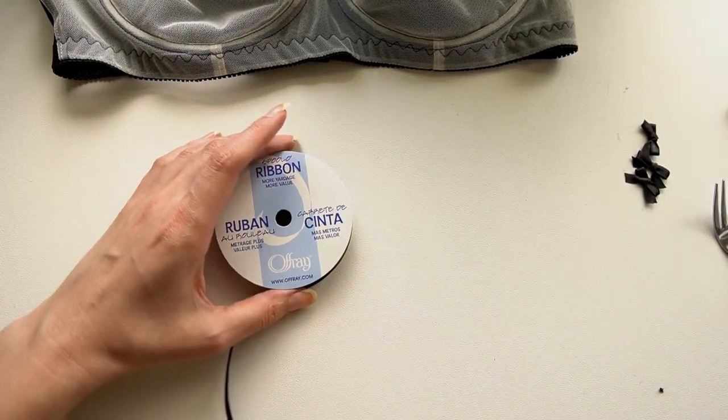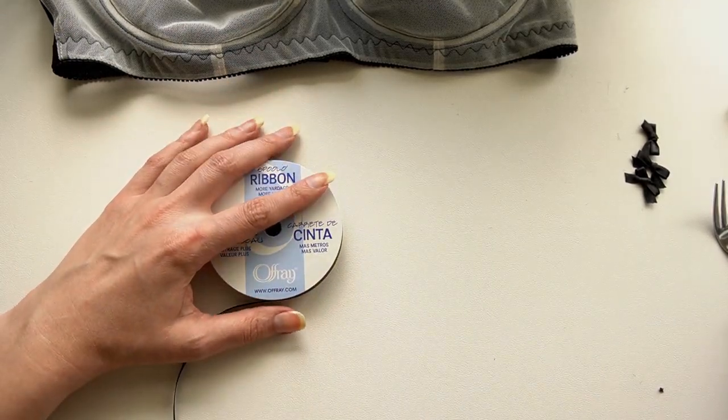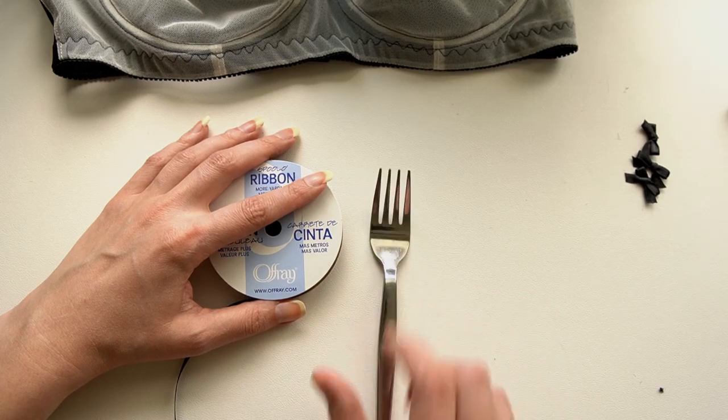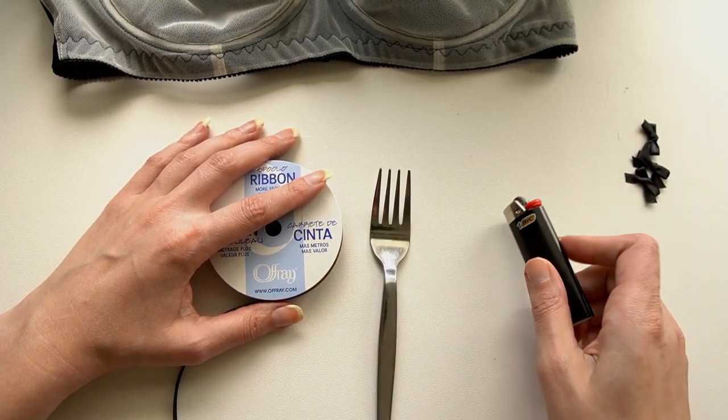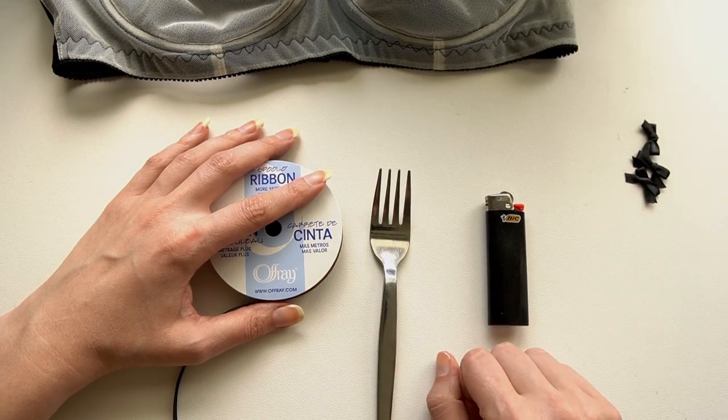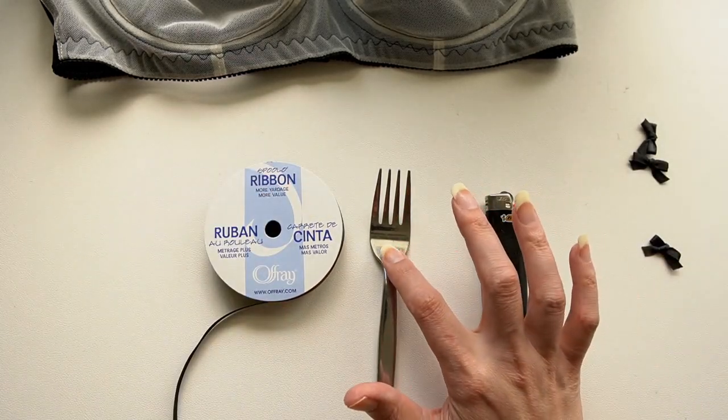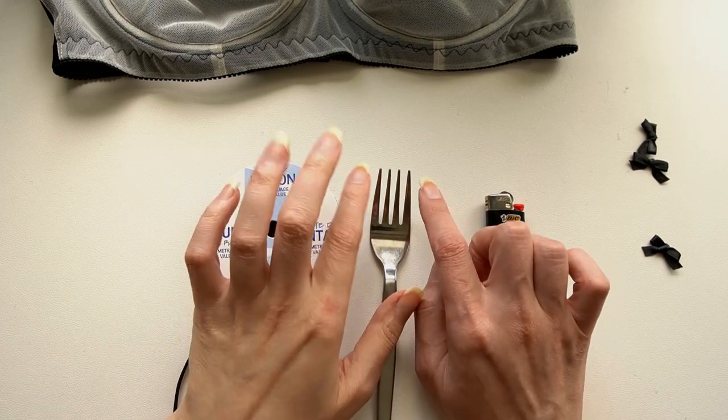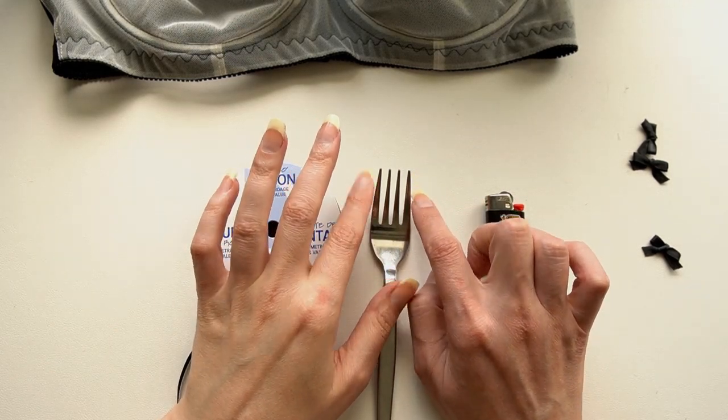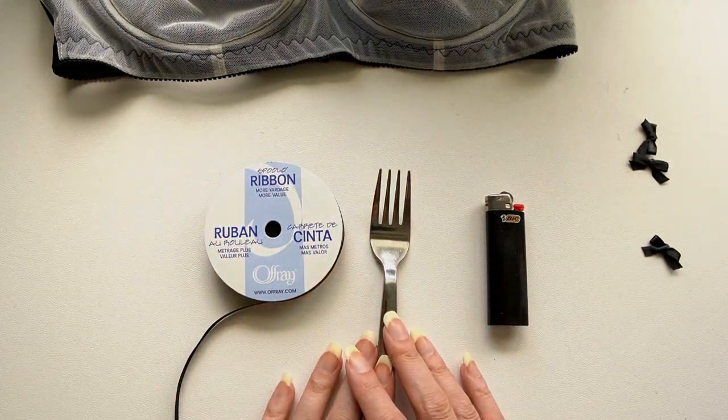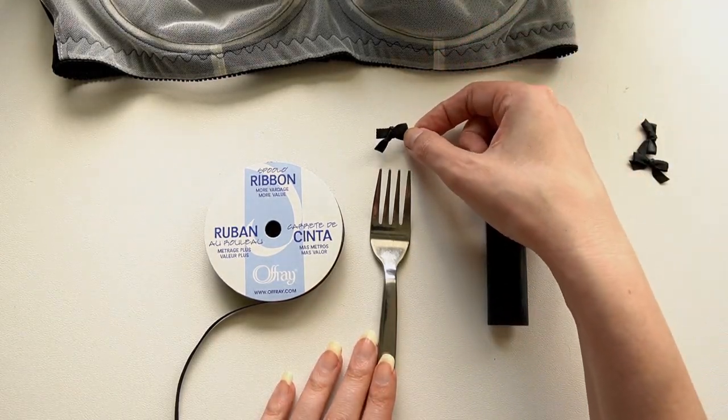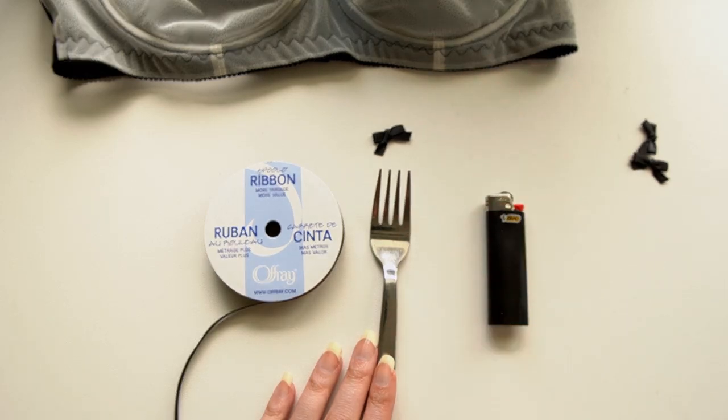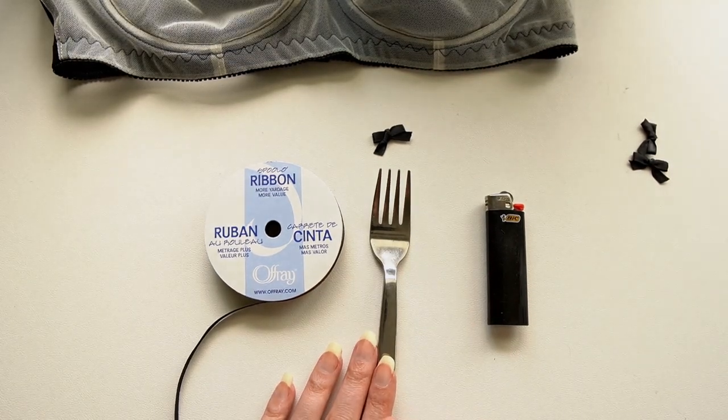So once you have your polyester ribbon selected, you are also going to need a fork from your kitchen, and lastly we're going to need a lighter for finishing off the ends. When picking out your fork, you want something where the width of the fork will end up being the finished width of your ribbon. So I really like these three-quarters of an inch ribbons or one-inch ribbons. I think they look perfect on lingerie, so that's the size fork that I've selected.